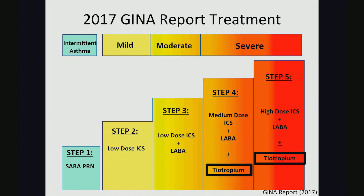Looking at GINA report treatment, it is based on the asthma classification. In step one — intermittent asthma — a short-acting beta agonist as needed is sufficient. Stepping up to mild asthma, a low-dose inhaled corticosteroid can be initiated. For moderate asthma, a low-dose inhaled corticosteroid is used in combination with a long-acting beta agonist. In steps four and five — the more severe category — a medium or high-dose inhaled corticosteroid in combination with a long-acting beta agonist is used, with the option to add on tiotropium based on the patient's severity and symptoms.